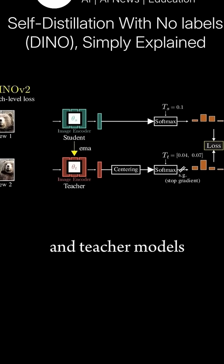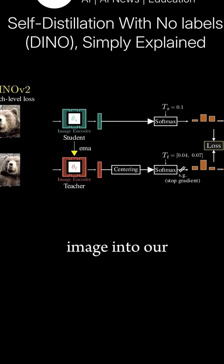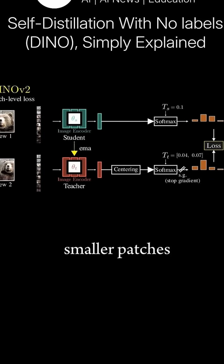Both the student and teacher models use a vision transformer as their image encoder. In other words, before feeding the image into our model, we first split the image into smaller patches.